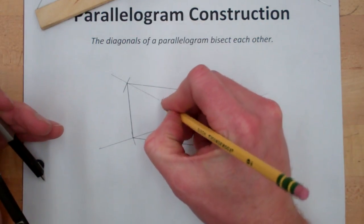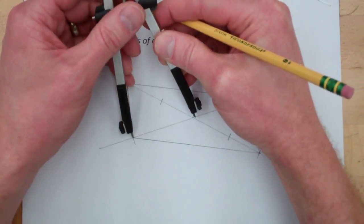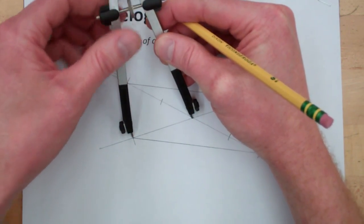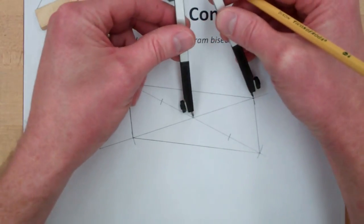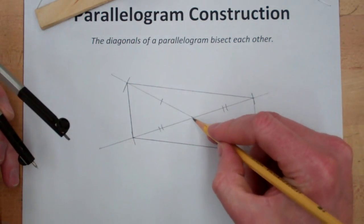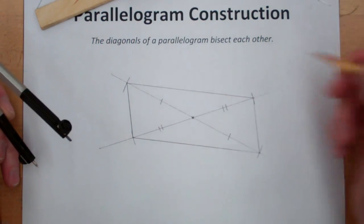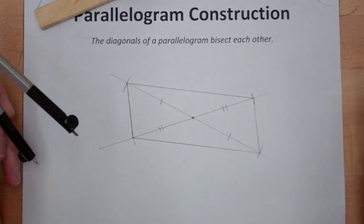I'll mark that this is congruent to this, and if I set my compass back to this length here, you can see that this distance is equal to this distance, this point being the midpoint of both of these segments, making them bisect each other.